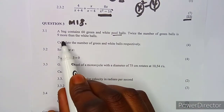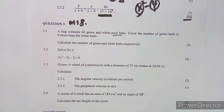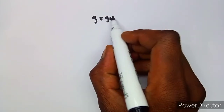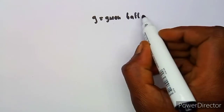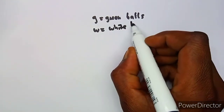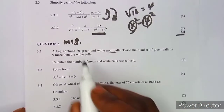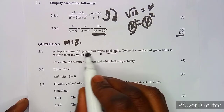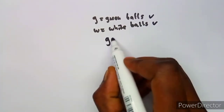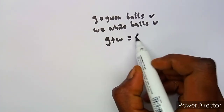Twice the number of green balls is nine more than the white balls. Let's use g to represent green balls and w to represent white balls. Since the green and white balls together total 60, we write: g + w = 60.